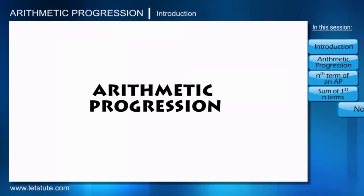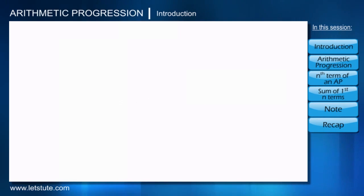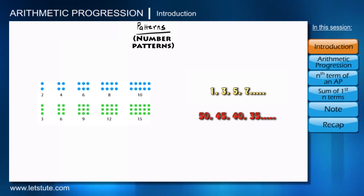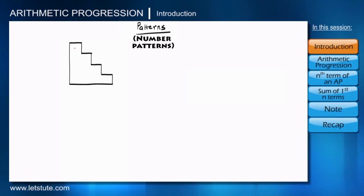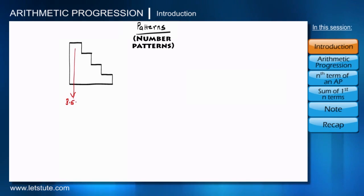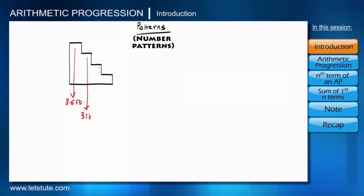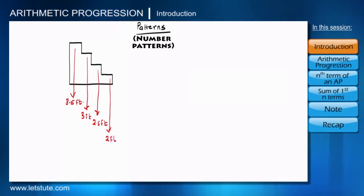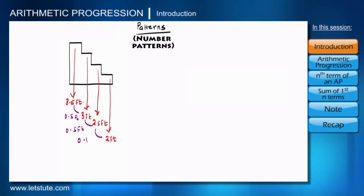In this session we are going to discuss about some interesting patterns. There are many things around us which follow specific patterns. For example, the height of the first stair step from the left is 3.5 feet, the second step is 3 feet, the third step is 2.5 feet, and the last step is 2 feet. Every next step is reduced by 0.5 feet.